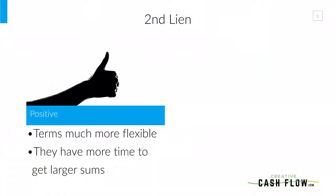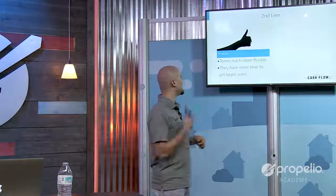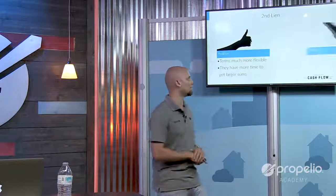I like this option too — it works well if you don't have the full capital up front and it's a larger amount; just set them up with a second lien. The terms are going to be much more flexible because you have more time on your side. They have more time to create larger sums of money for you through tax refunds, finding another job, or whatever they need to do to come up with the money.